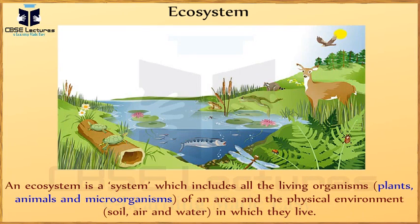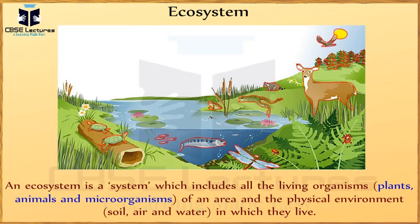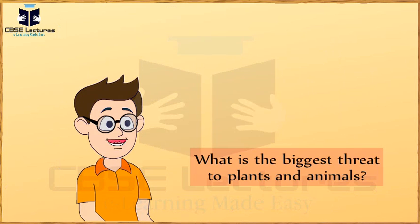Ecosystem: an ecosystem is a system which includes all the living organisms like plants, animals and microorganisms of an area and the physical environment like soil, air and water in which they live.